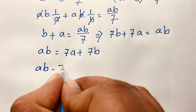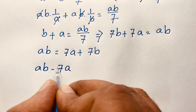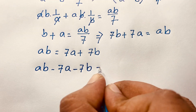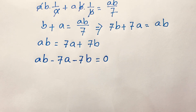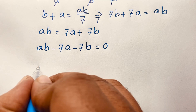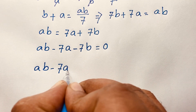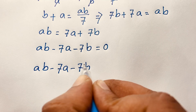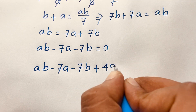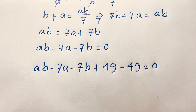Now moving terms over: ab minus 7a minus 7b is equal to 0. To help with factoring, I add 49 and subtract 49, so ab minus 7a minus 7b plus 49 minus 49 is equal to 0.